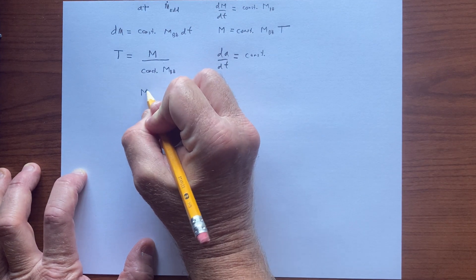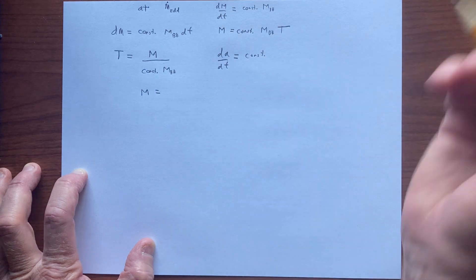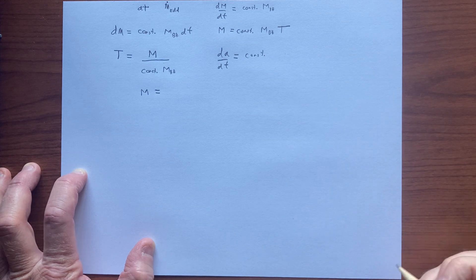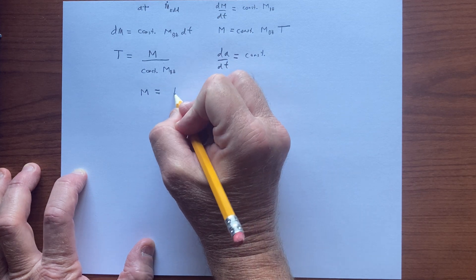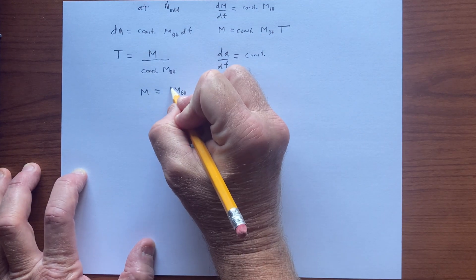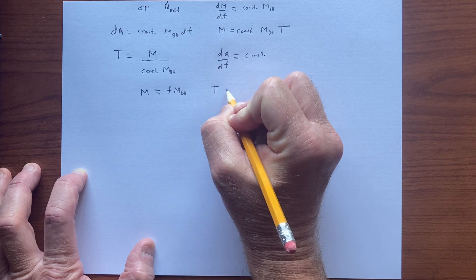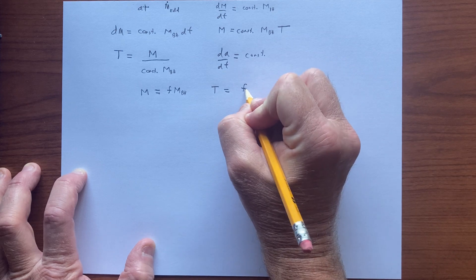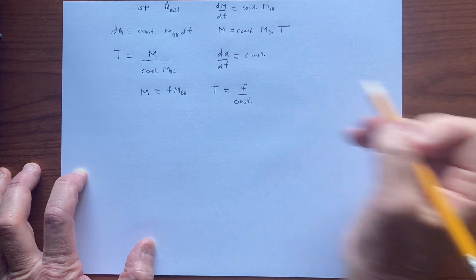The mass added to the black hole can be written in terms of the mass of the black hole. How much mass is added? It's some fraction of the mass of the black hole. So the time necessary for that mass to be added ends up being some fraction over a constant — that's some number — and this is not a function of the mass of the black hole.